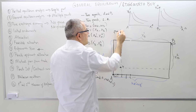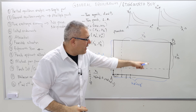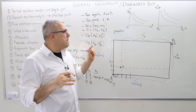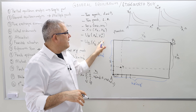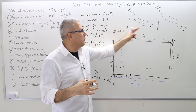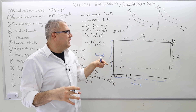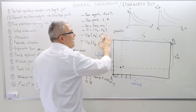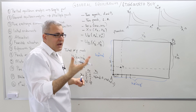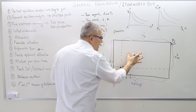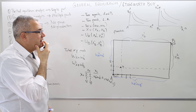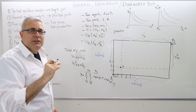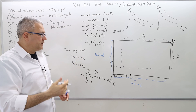Every allocation in the Edgeworth box is feasible, and all feasible allocations must be in the Edgeworth box. Any allocation outside of the Edgeworth box is non-feasible. So the box captures exactly the set of all feasible allocations.